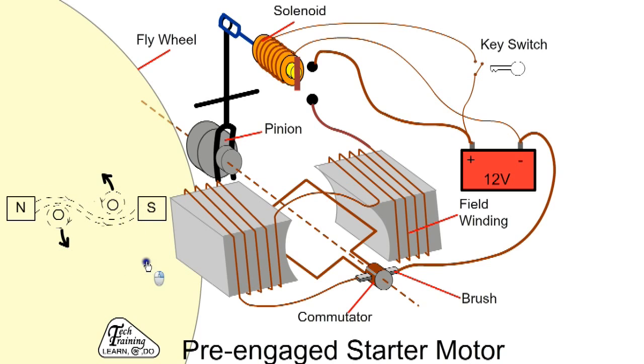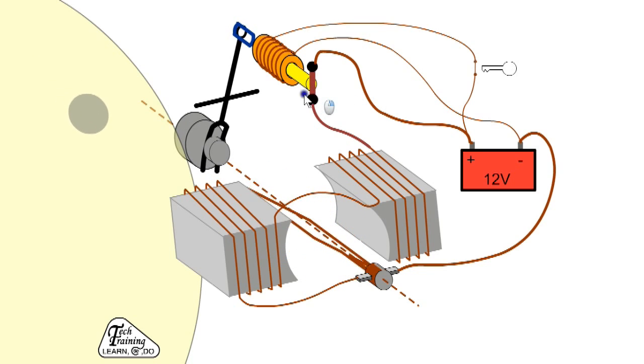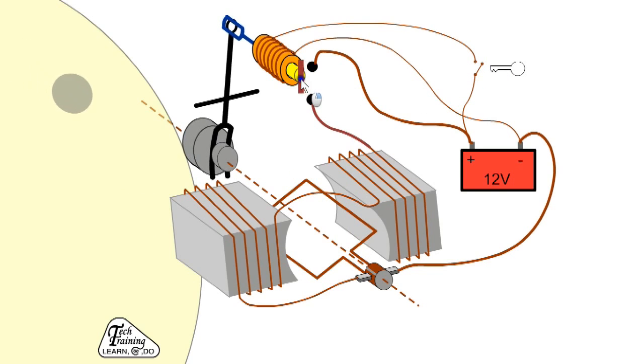When the key is turned, the solenoid or relay is energized. The plunger moves forward and engages the pinion with the flywheel. At the end of its travel, it closes the main contacts for the starter. High current passes through the heavy cables and the motor rotates and cranks the engine. When the key is released, the solenoid moves back, stops the motor and disengages the pinion. Note, the flywheel remains rotating.